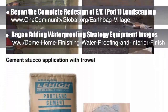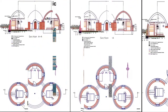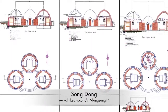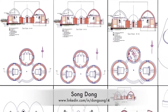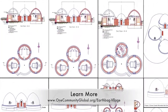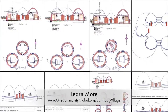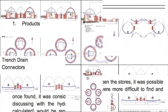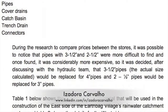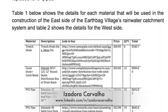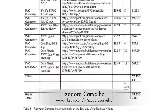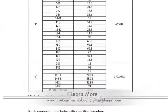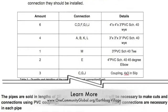Behind the scenes, we also began researching and adding all the waterproofing strategy equipment and materials images and descriptions — about 50% done — which will, once added to the site, complete the final 25% of the waterproofing strategy tutorial page. Song Nong, Masters in Mechanical Engineering, also finished the third round of elevation and cross section modeling of three dome structures in AutoCAD, adding artistic door and window elements and creating front views for all four designs.